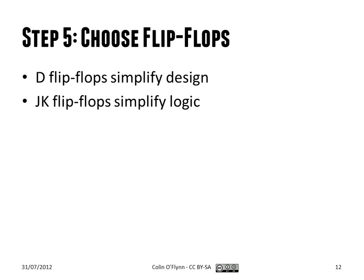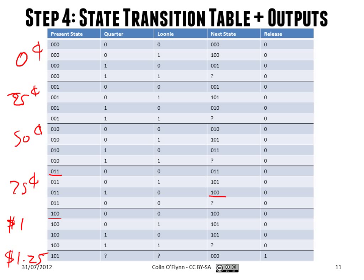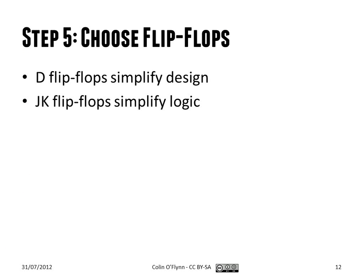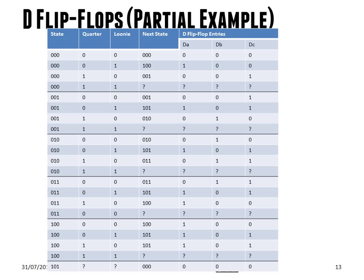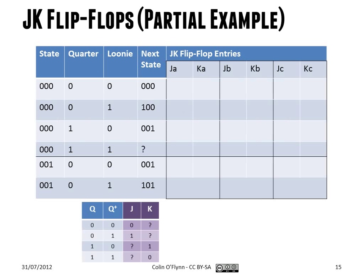Next we choose the flip-flops. The flip-flops are how we move from the present state to the next state, just like when you're designing a counter. The difference with an FSM is that there are inputs deciding if you move, and potentially you could skip states or move backwards. With D flip-flops, the design is simplified because the required input to each flip-flop is just the required next state — they're one and the same. So when designing the logic, the input to the flip-flop is just the required next state.